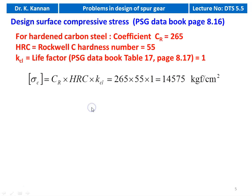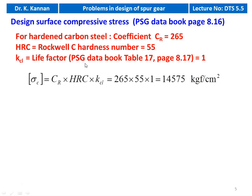For hardened carbon steel: coefficient Cr equals 265, Rockwell C hardness Hrc is 55. The life factor Kcl is assumed as 1, which is the life factor for life more than 10⁷ cycles. So sigma_c equals Cr × Hrc × Kcl, from the equation on page 8.16: 265 × 55 × 1 = 14,575 kgf/cm².